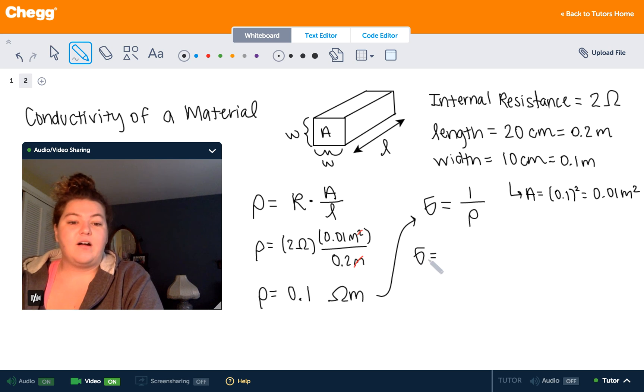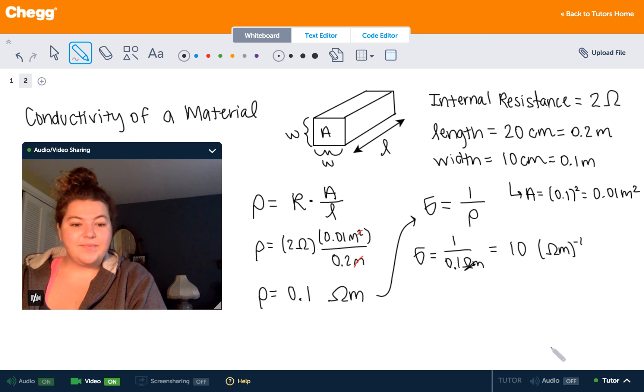And we know that conductivity sigma is equal to 1 divided by 0.1 ohm meters. And 1 divided by a tenth is simply 10. And we can write that in inverse ohm meters.